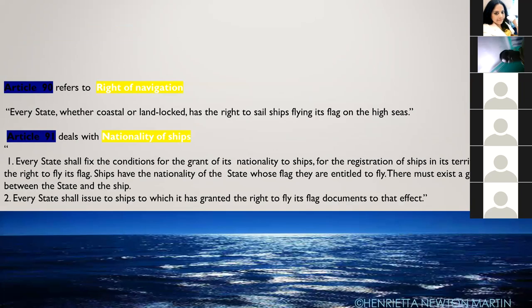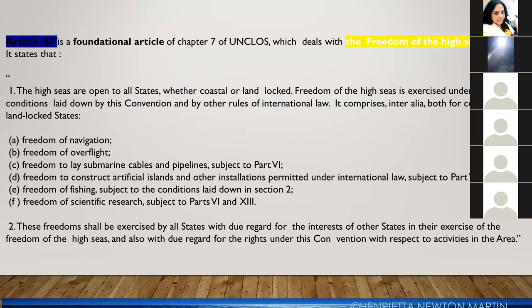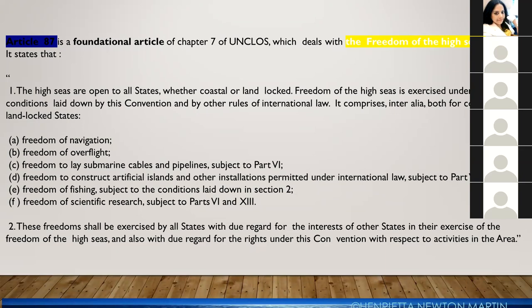To summarize: Article 87 is the foundational article of Chapter 7 of the United Nation Convention on the Law of the Sea. Every ship must carry the flag of the country it belongs to, procedures for inquiries in case of collision must be followed, and the right of hot pursuit is a particularly important provision. Students are encouraged to review their notes and bring any questions to the next class.